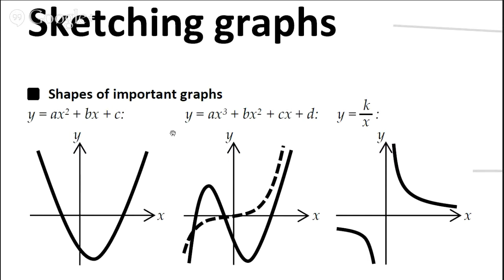There are three graph types to cover. You've got a quadratic graph, i.e. a graph with a power 2 which is the highest power in the equation. This is a cubic graph, so the highest power is a 3. And you've got a reciprocal graph which looks like this — some number over x. There could be more variations on that, but I'll cover those in another video on sketching graphs on my website, sigmas.wordpress.com.